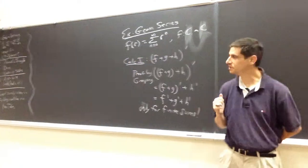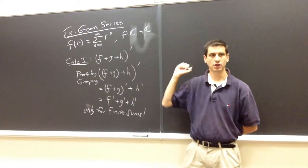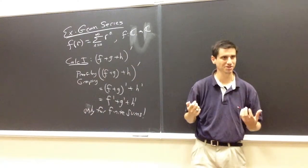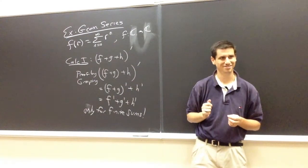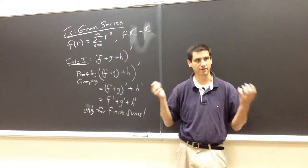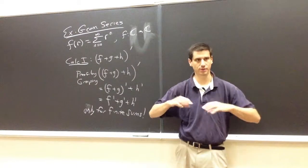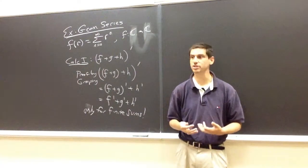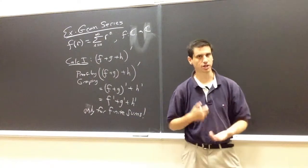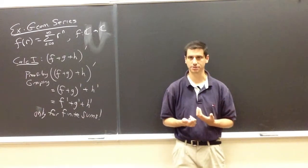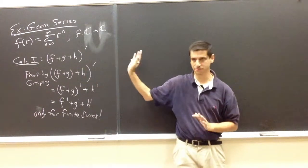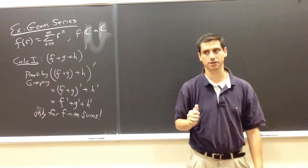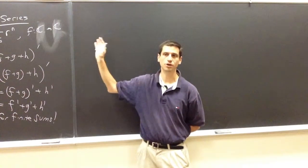Since it's only for finite sums, we need something that's going to work in general. One approach is the nuclear approach: prove a big powerful theorem which includes this as a special case. One of the homework problems is to show that if I have an infinite sum within the radius of convergence, I can differentiate term by term, get a new series that also converges, and that equals the derivative.